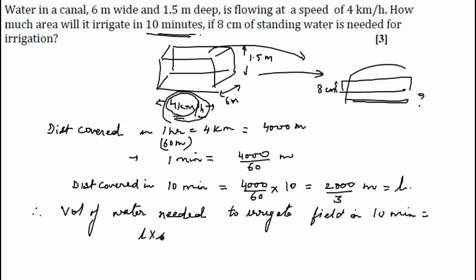So this will be equal to LBH, simple formula, that will be 2,000 by 3 into breadth is 6 into height 1.5. On simplification it gives us 6,000 meter cube.